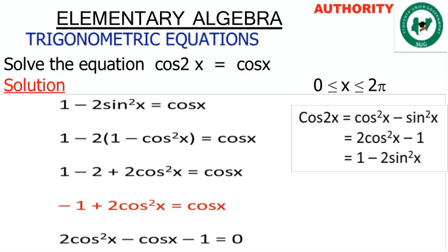You can also choose the second formula — 2cos²x minus 1 — and still arrive at the same answer. You can choose any of them. Now, sin²x is the same as 1 minus cos²x, so we replace sin²x with that. We now have: 1 minus 2(1 minus cos²x) equals cos x.